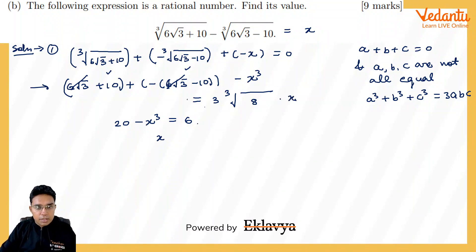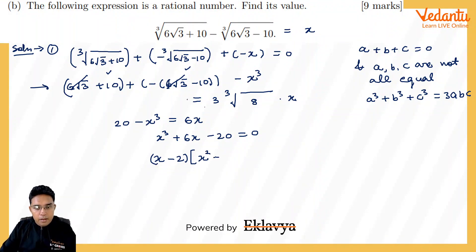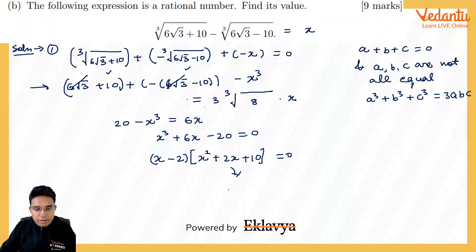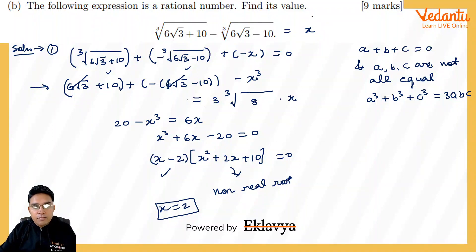This gives us x³ + 6x - 20 = 0. You can verify that x = 2 satisfies this, so (x-2) is one factor. The other factor is x²+2x+10, which has only non-real (complex) roots. Therefore the only real solution is x = 2, and the value of the expression is 2.